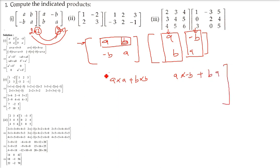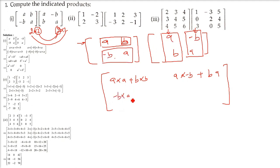Now move down — the second row has to be done exactly the same way with both columns. So: minus b into a, plus a into b. Then the same row with the second column: minus b into minus b, plus a into a.